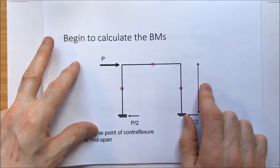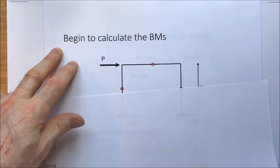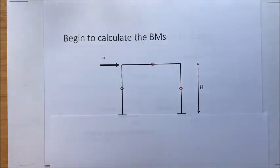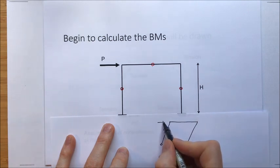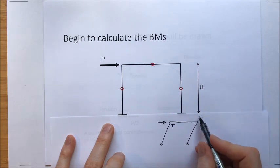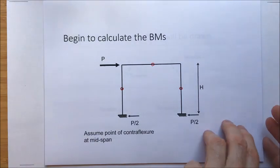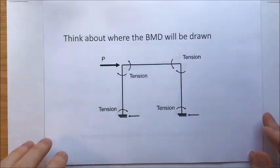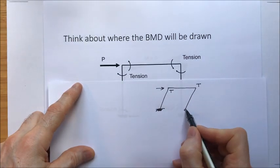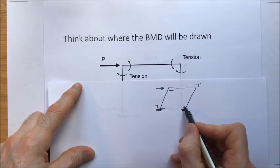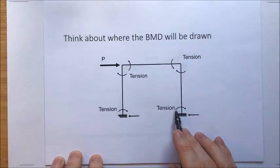We can consider where bending moments are likely to occur. The frame is being pushed over to the right. As corners open and close: tension on the inner face of the joint that opens, and tension on the outside face of the joint that closes. With fixed feet, I'd expect tension on those faces as the frame bends over. So we can now think about where the bending moment would be drawn.